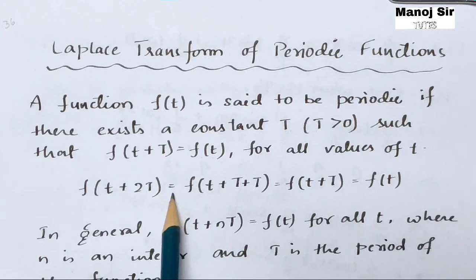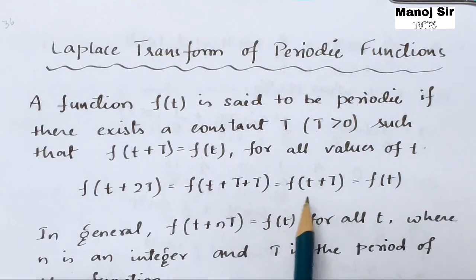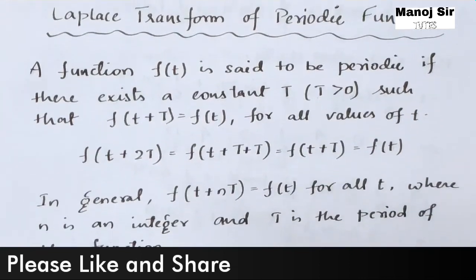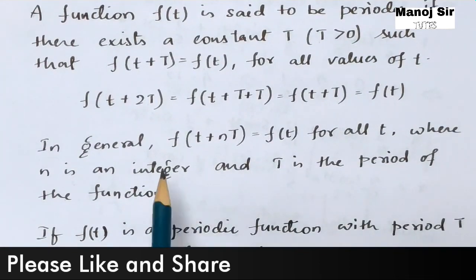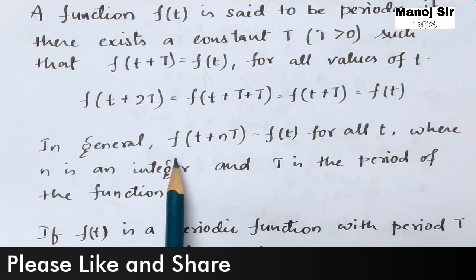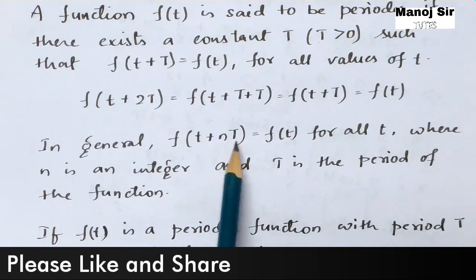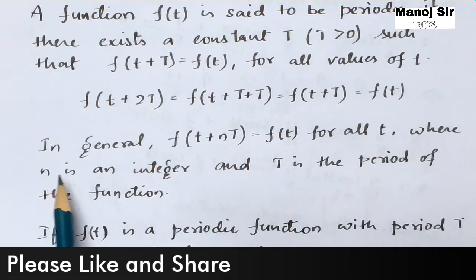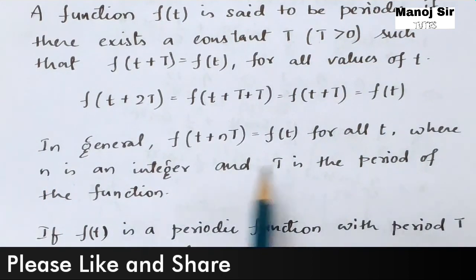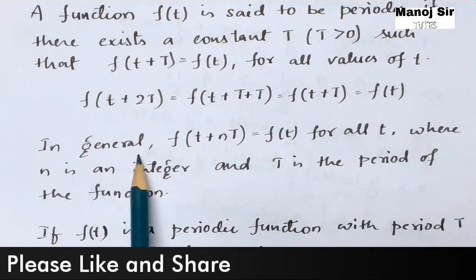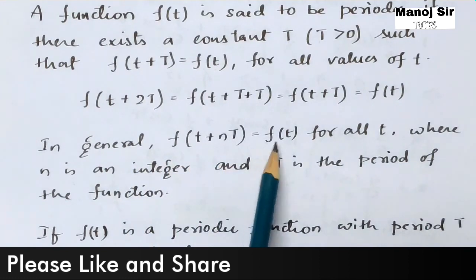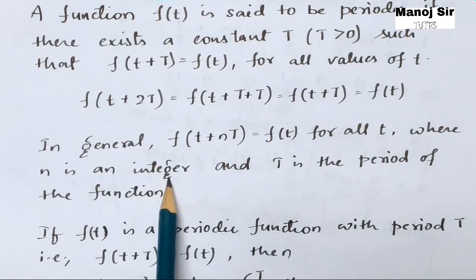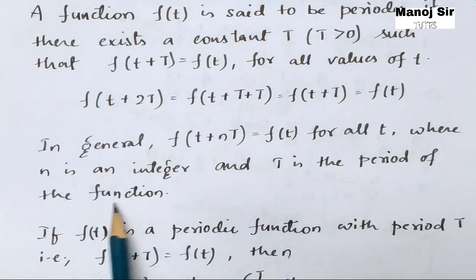We can also show that f(t + 2T) equals f(t + T + T) equals f(t). In general, f(t + nT) equals f(t) for all values of t, where n is an integer. Here T is the period of the function.